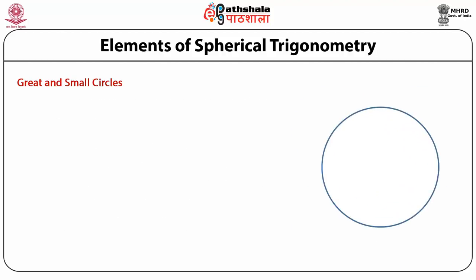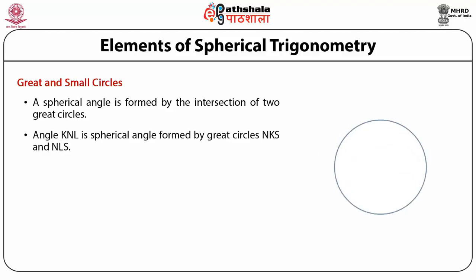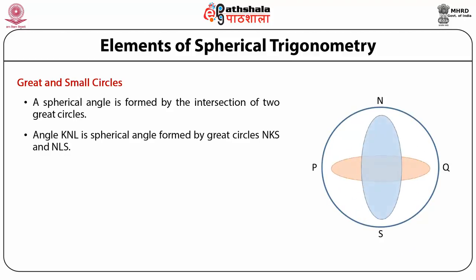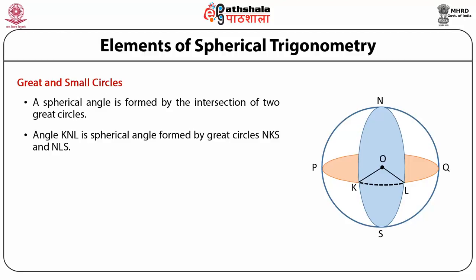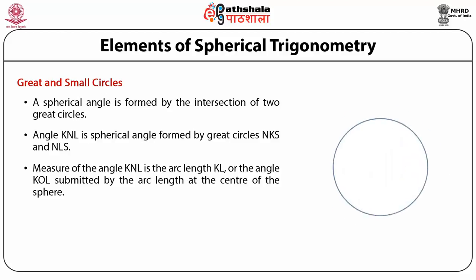We will learn about the spherical angle. A spherical angle is formed by the intersection of two great circles. In the picture shown here, the two great circles are NKS and NLS. The intersection of these two great circles forms a spherical angle KNL. The measure of this angle KNL is the angle KOL subtended at the center of the sphere. As the radius of the sphere is fixed, it is customary to measure angles in terms of arc. Therefore, either we say the angle KOL or we say the arc KL — both are equivalent.